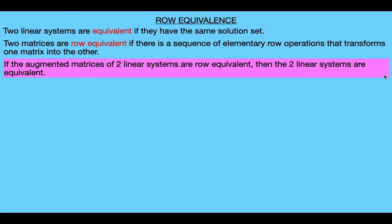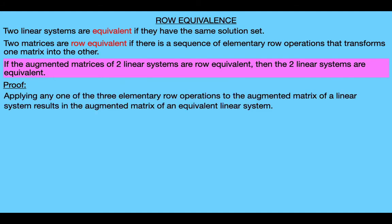This statement says that if the augmented matrices of two linear systems are row equivalent, then the two linear systems are equivalent. We're going to prove this statement, but before we do that, we'll first prove something slightly easier that will help us: that applying any one of the three elementary row operations to the augmented matrix of some linear system results in the augmented matrix of an equivalent linear system.